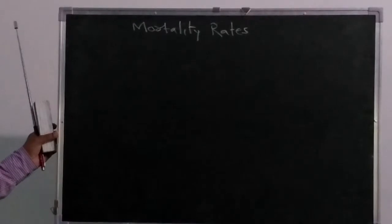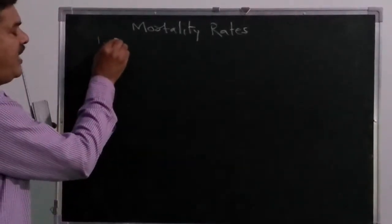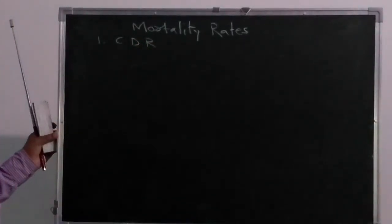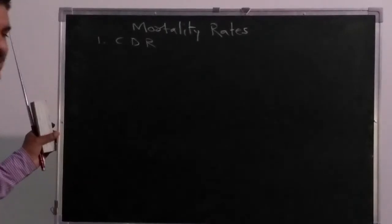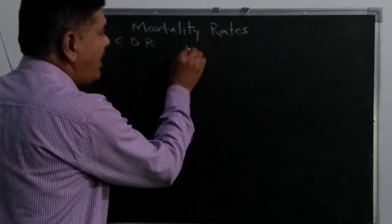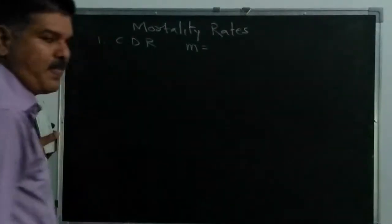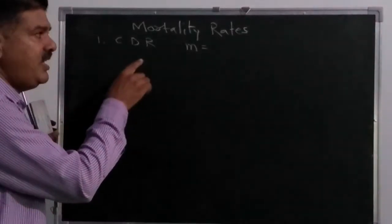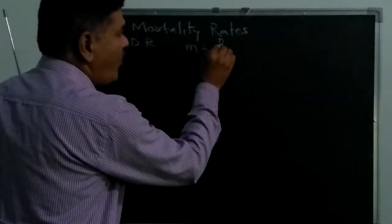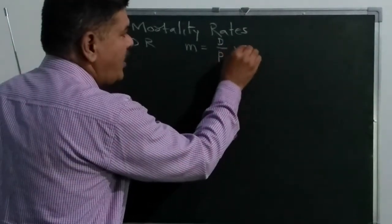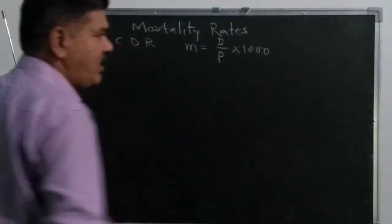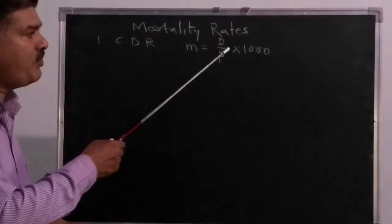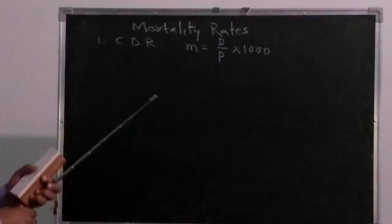So far we have seen the first mortality rate, that is CDR — Crude Death Rate. CDR is denoted by M, where M is the mortality rate. For CDR, M is the total number of deaths divided by total population, multiplied by 1000. So M is deaths per 1000 population — that is CDR.